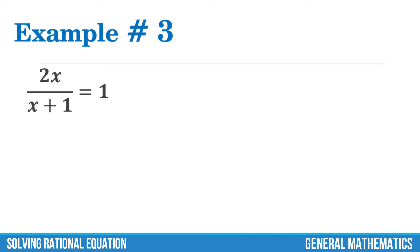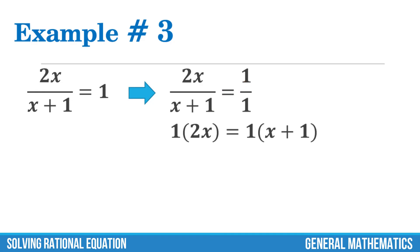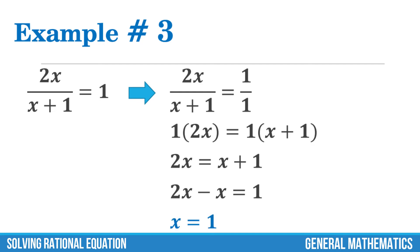Example number 3. 2x over x plus 1 equals 1. First, we write the equation as 2x over x plus 1 is equal to 1 over 1. Next, cross multiply. 2x times 1 is 2x, and 1 times x plus 1 is x plus 1. Apply the addition property of equality, or simply transpose positive x to the left-hand side — it will become negative x. 2x minus x is x. Therefore, the value of x is 1.